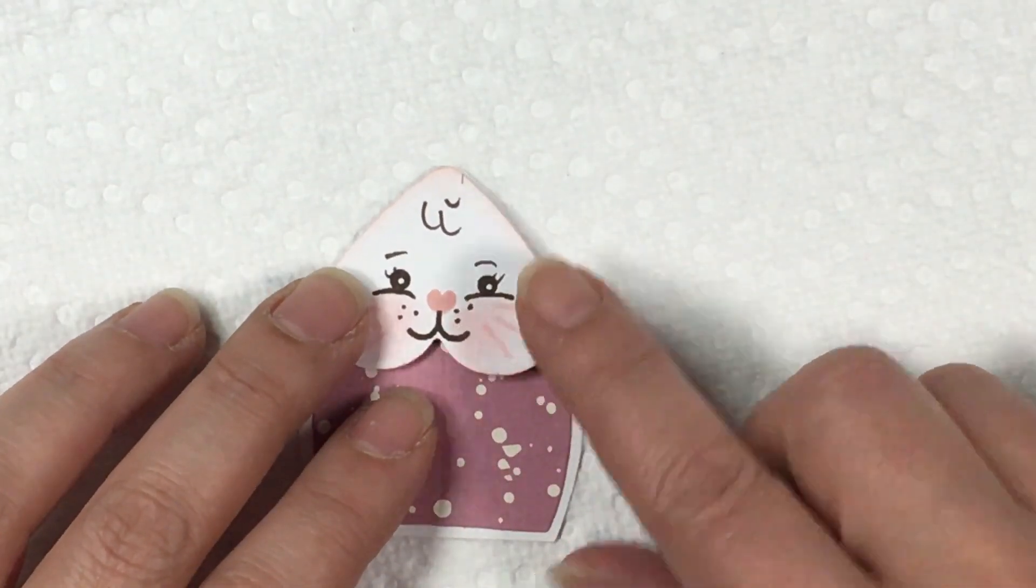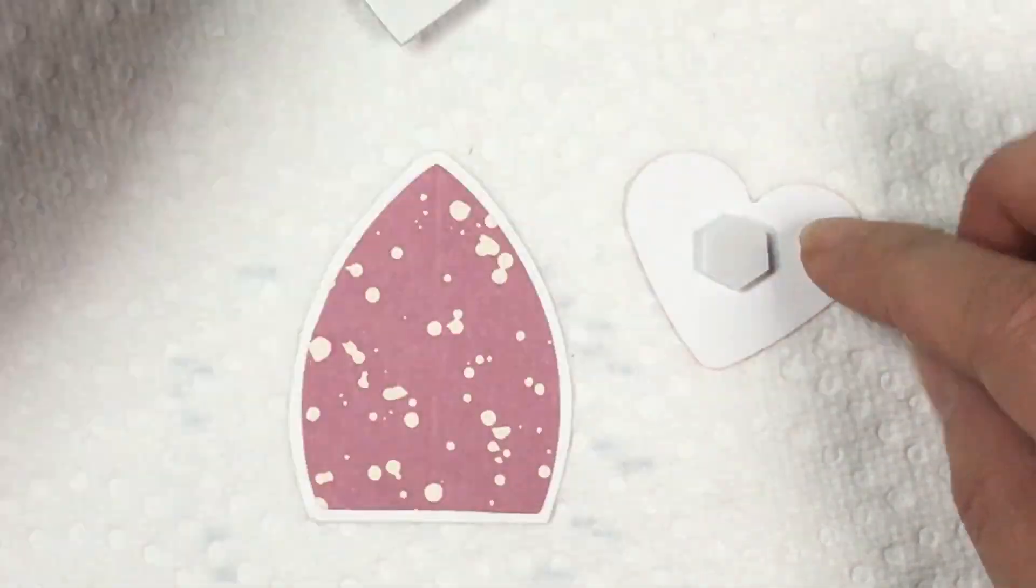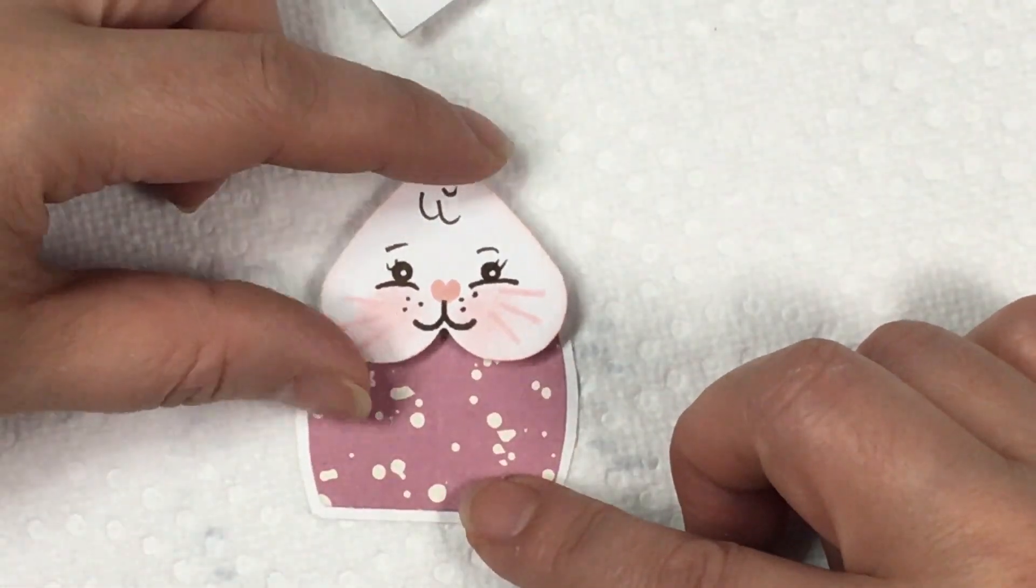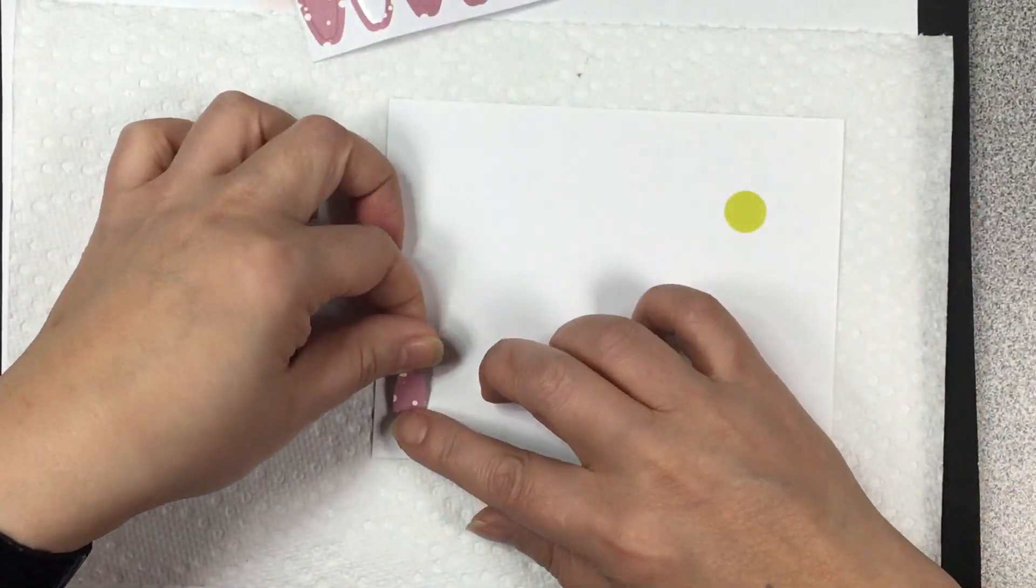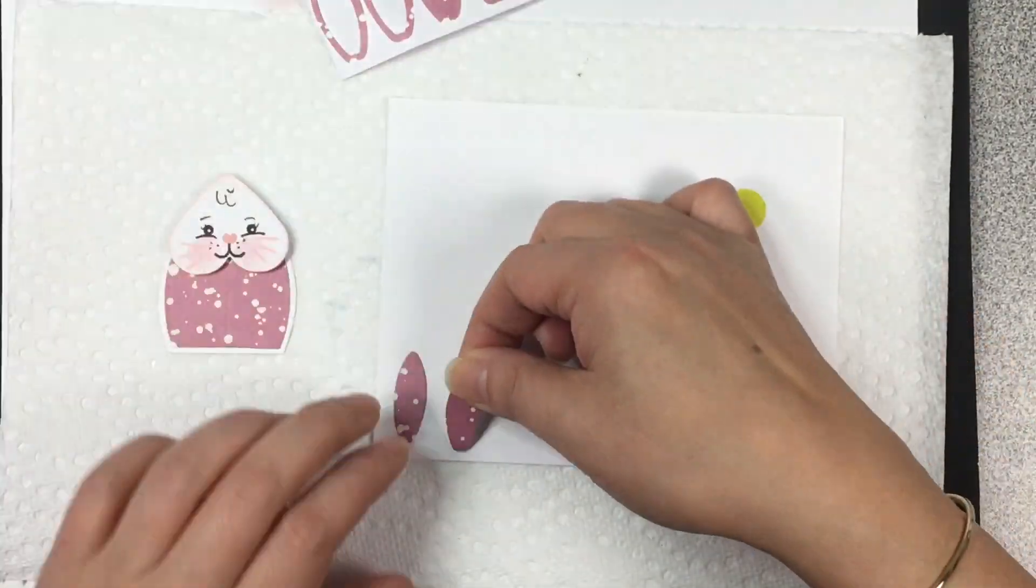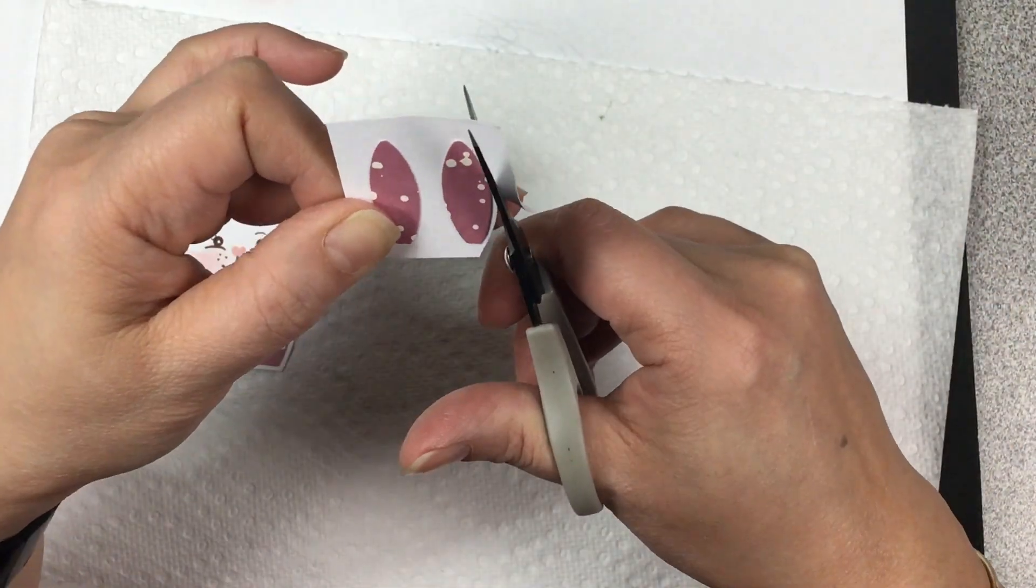I did grab the Blushing Bride stamp and white marker later, well afterwards, and I just kind of redefined those whiskers because as the ink dried it kind of faded a bit into each other. So you'll kind of see that at the end.